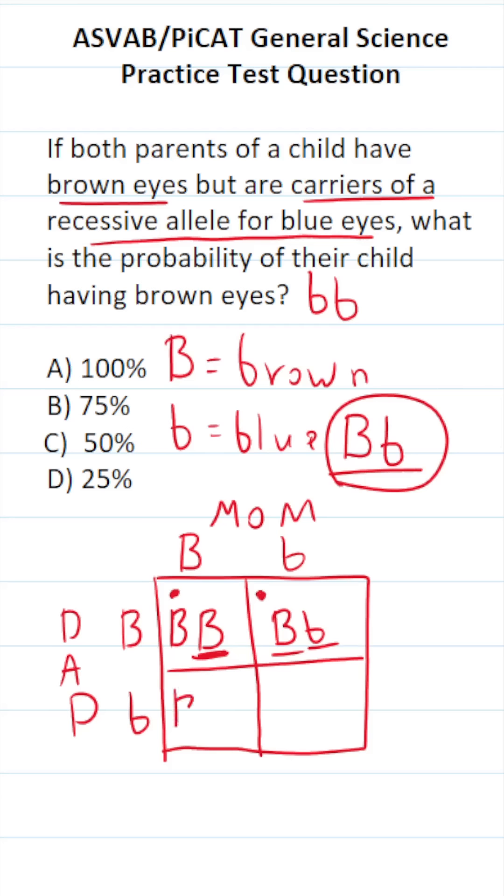In this box, we have big B from the mom, little b from the dad. So this offspring would have brown eyes, but again, they're a carrier of the recessive allele for blue eyes. And in this box, we get a little b from the mom and a little b from the dad, so this offspring would have blue eyes.